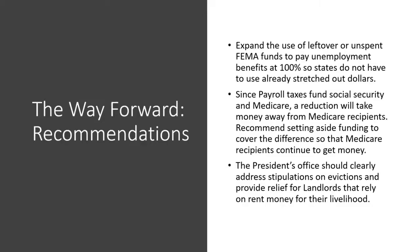Here are some recommendations as a way forward. Number one: expand the use of leftover or unspent FEMA funds to pay unemployment benefits at 100 percent so states do not have to use already stretched-out dollars. Number two: since payroll taxes fund Social Security and Medicare, a reduction will take money away from Medicare recipients — recommend setting aside funding to cover the difference so that Medicare recipients continue to get money. Number three: the president's office should clearly address stipulations on evictions and provide relief for landlords that rely on rent money for their livelihood.